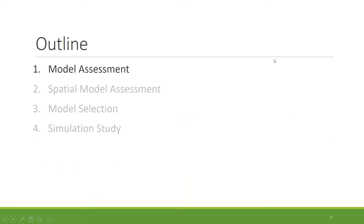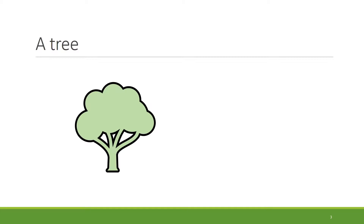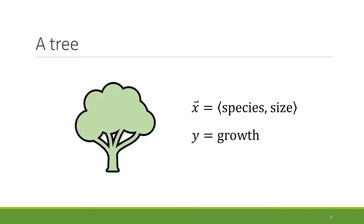We're going to start with a quick refresher on model assessment and cross-validation. So this is a tree, and individual trees are the observations we'll be working with today. We'll have two predictive variables per tree — species and size — and one response, which is growth. We'll generally think about responses as some combination of signal and noise. We assume that somewhere out there in nature, there's a relationship F between tree species, size, and growth, and all trees follow this relationship.